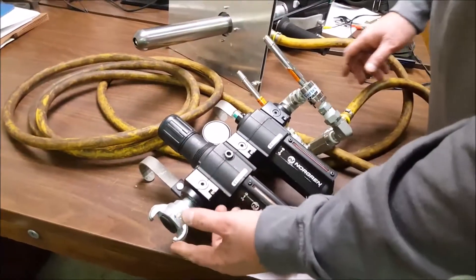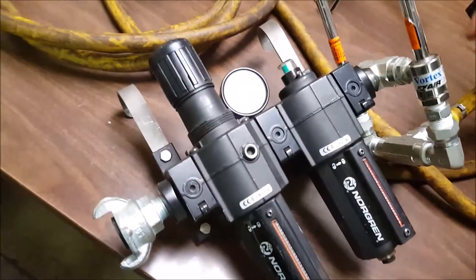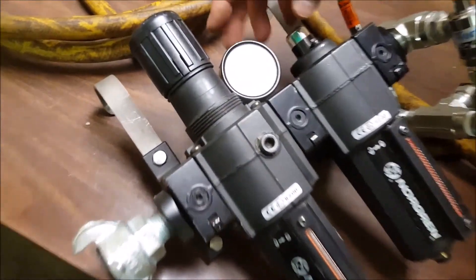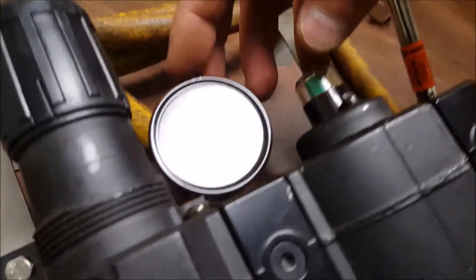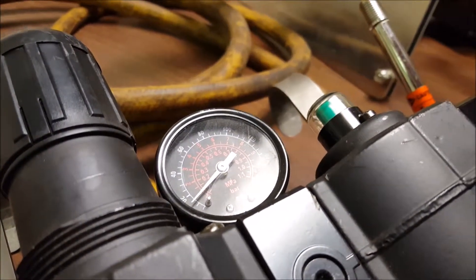When you hook your plant air up here, your Chicago fitting or whatever fitting you're going to use, you'll turn the air on and you want your regulator to show no less than 60 psi. That's what you recommend to keep the camera lens cool.